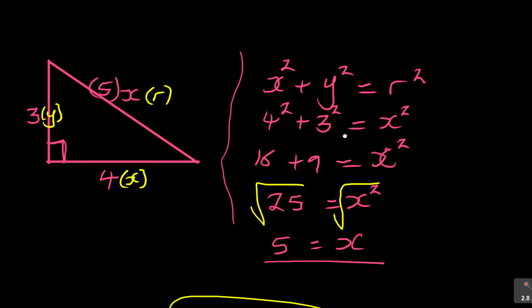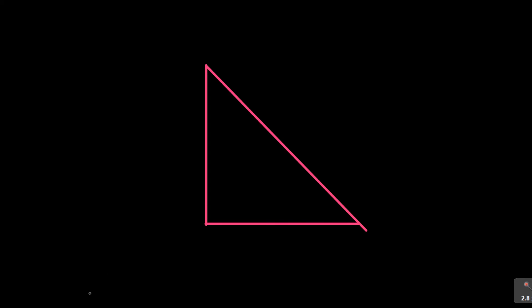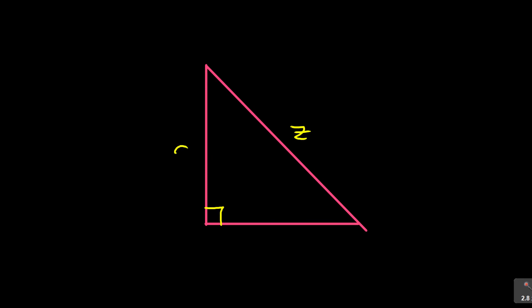Let me wrap it up. When given a triangle, number one, it must be a special type — it must have 90 degrees, making it a right angle triangle. Then you can apply the Pythagoras theorem. The sides can be labeled with any letters — for example, A, B, and Z. The theorem says A squared plus B squared equals Z squared. That is the Pythagoras theorem to apply whenever dealing with a right angle triangle.